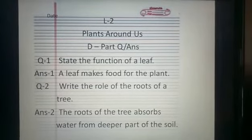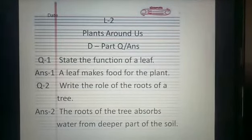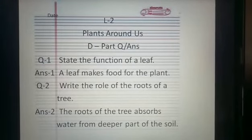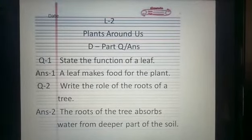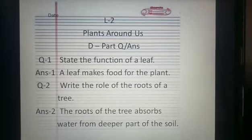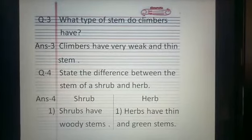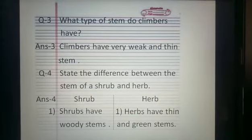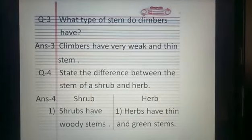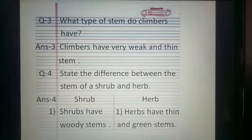Question number 1: State the functions of a leaf. Answer: A leaf makes food for the plant. Question number 2: Write the role of roots of a tree. Answer: The roots of the tree absorb water from the deeper part of the soil. Question number 3: What type of stem do climbers have? Answer: Climbers have a very weak and thin stem.